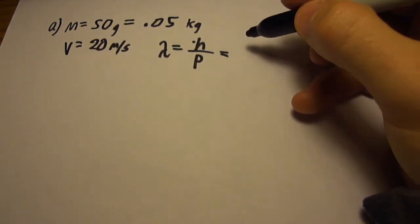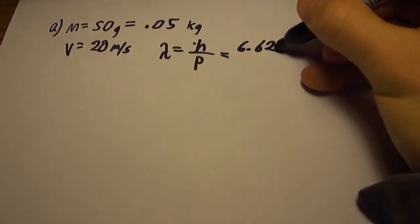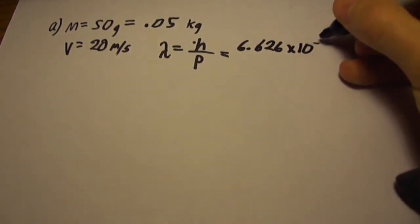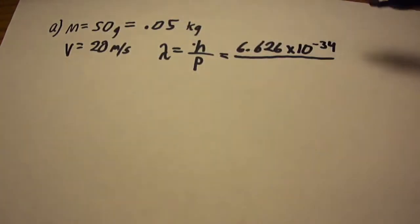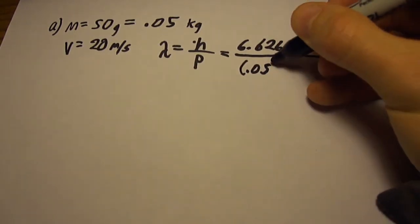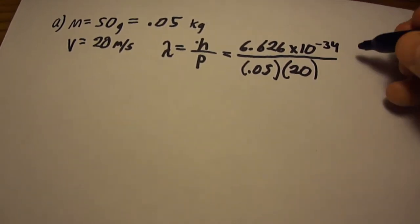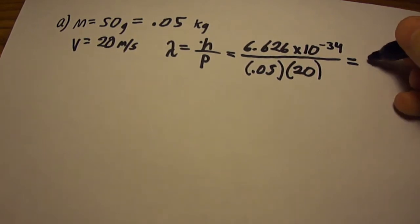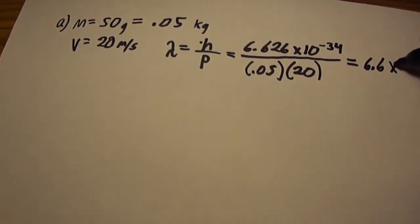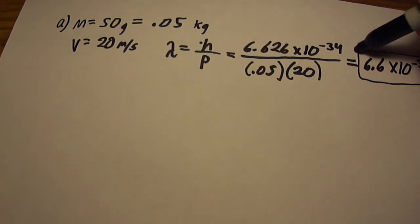I'm going to plug in the value for Planck's constant right away, which is 6.626 times 10 to the negative 34th, divided by m times v, which is 0.05 times 20. Plugging this into the calculator, you'll end up with 6.6 times 10 to the negative 34th. And this is the solution to part A.